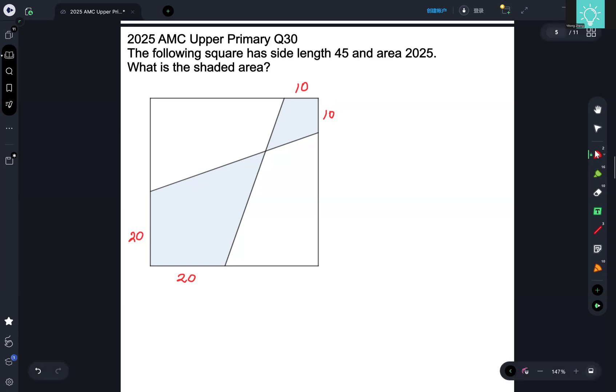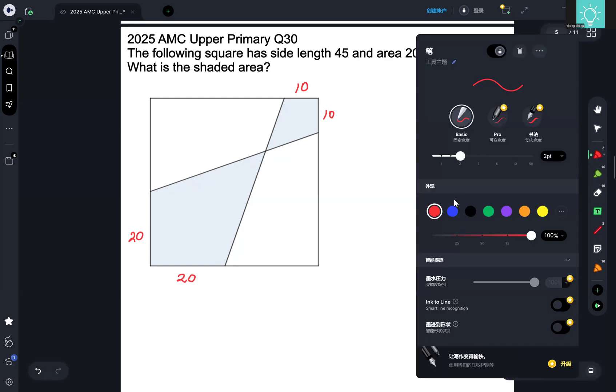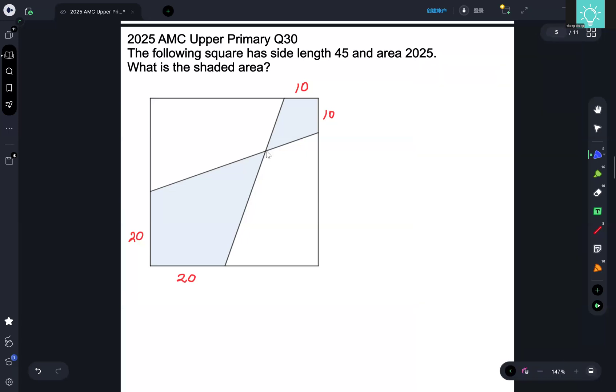So to calculate the shaded area, we need to try and find out what this point is first. Let's start by labeling some coordinates. I'm going to let this point be the origin, 0, 0. And because the square has side length 45, we know that this point must be 45 and 0, this point must be 45 and 45, and this point must be 0 and 45.